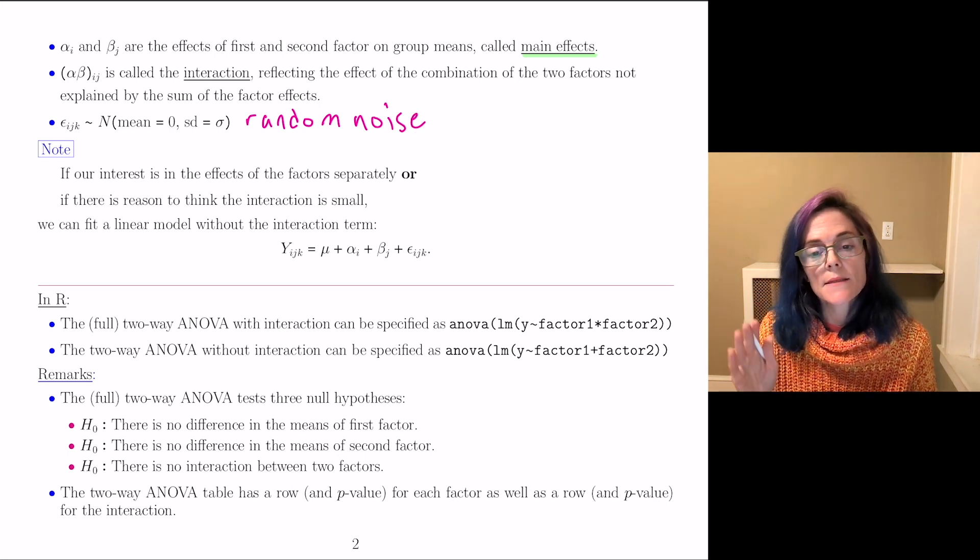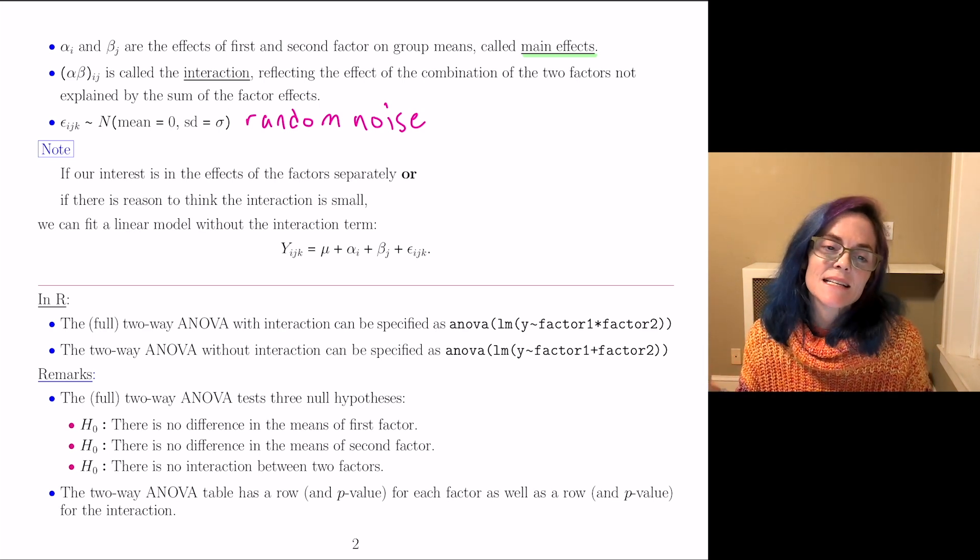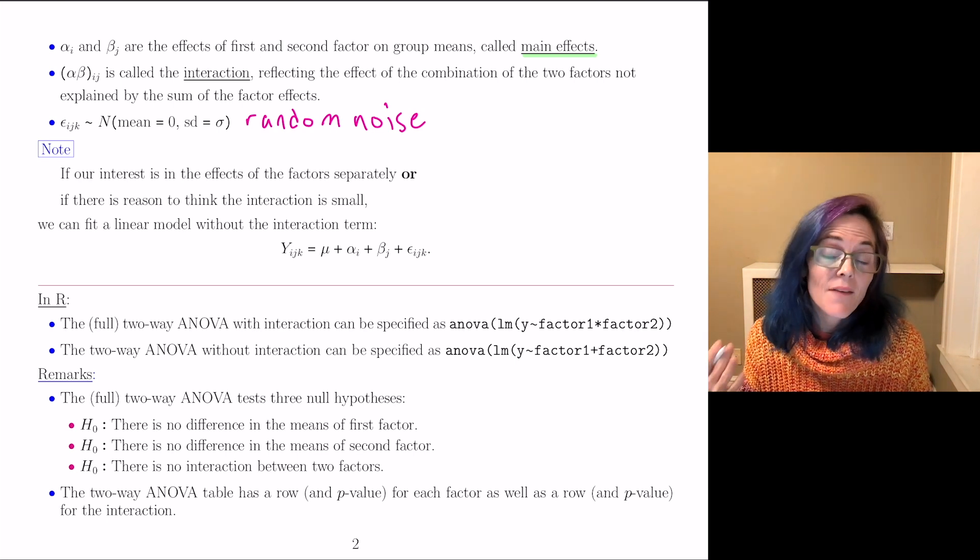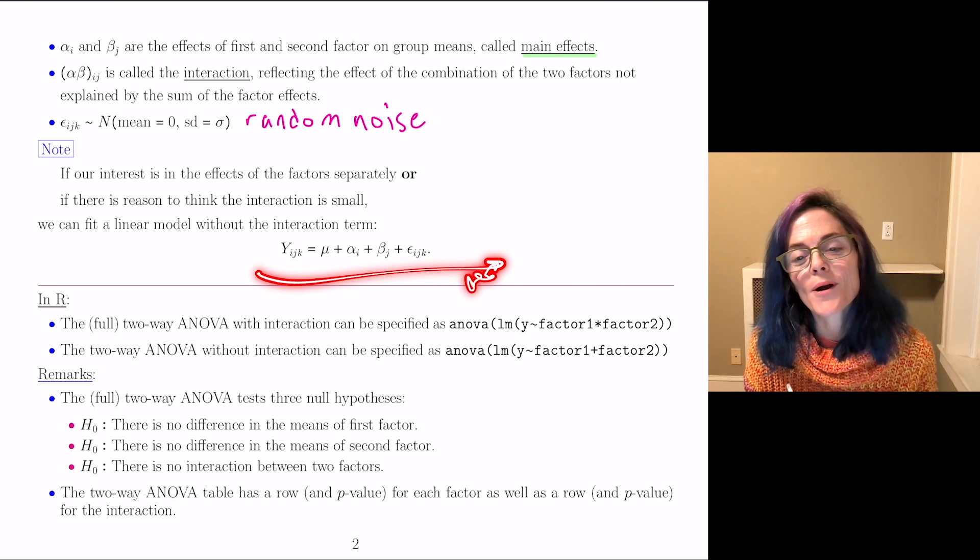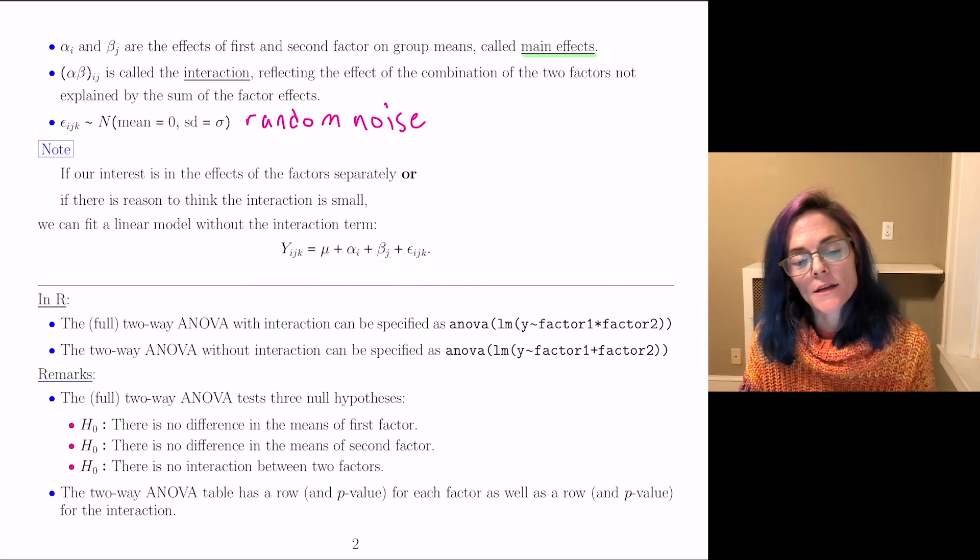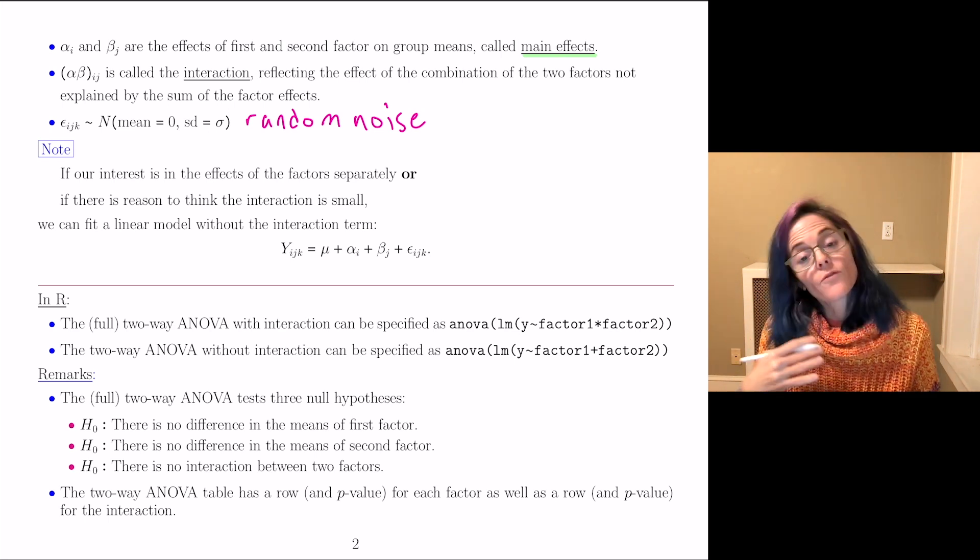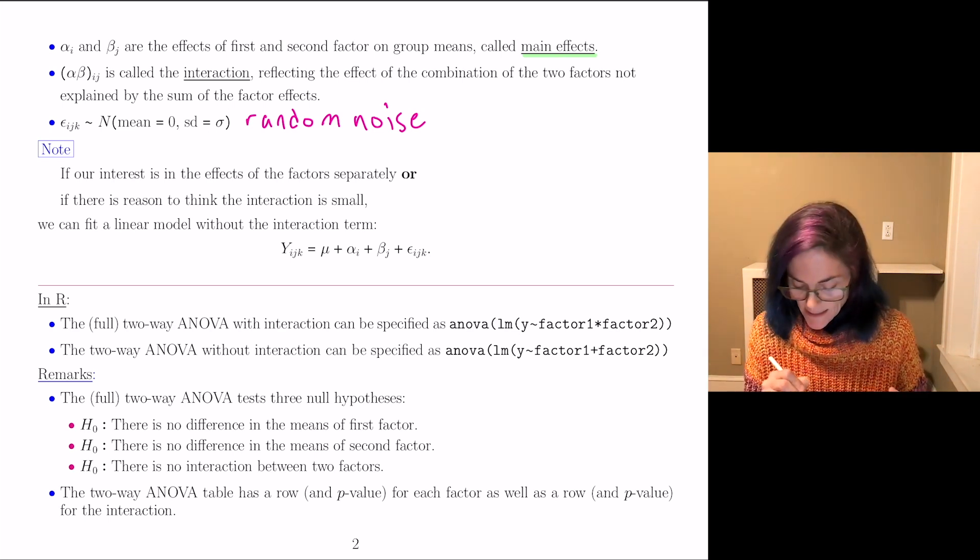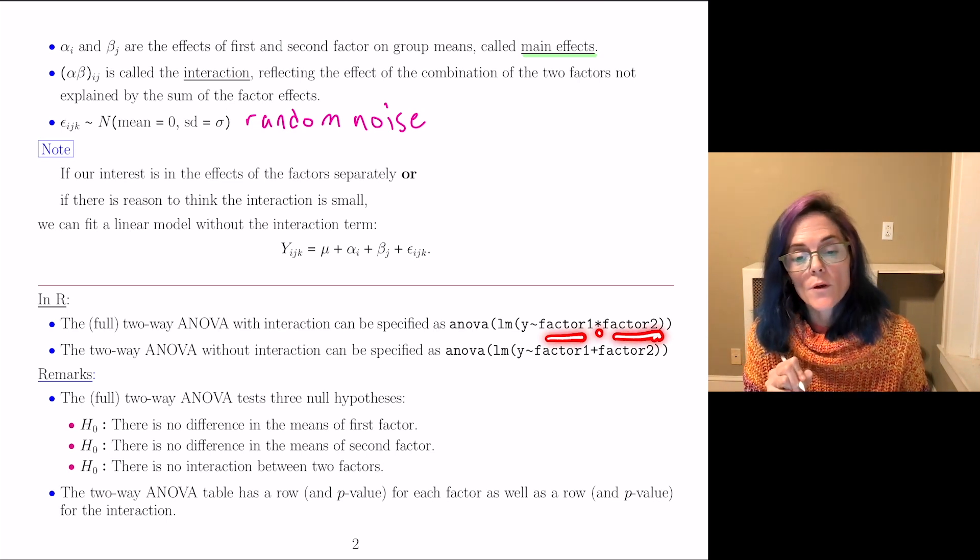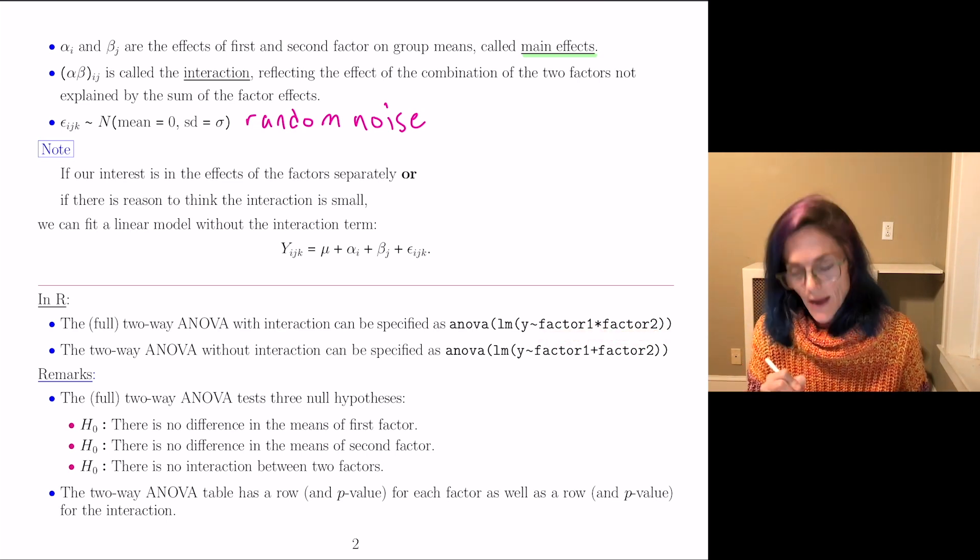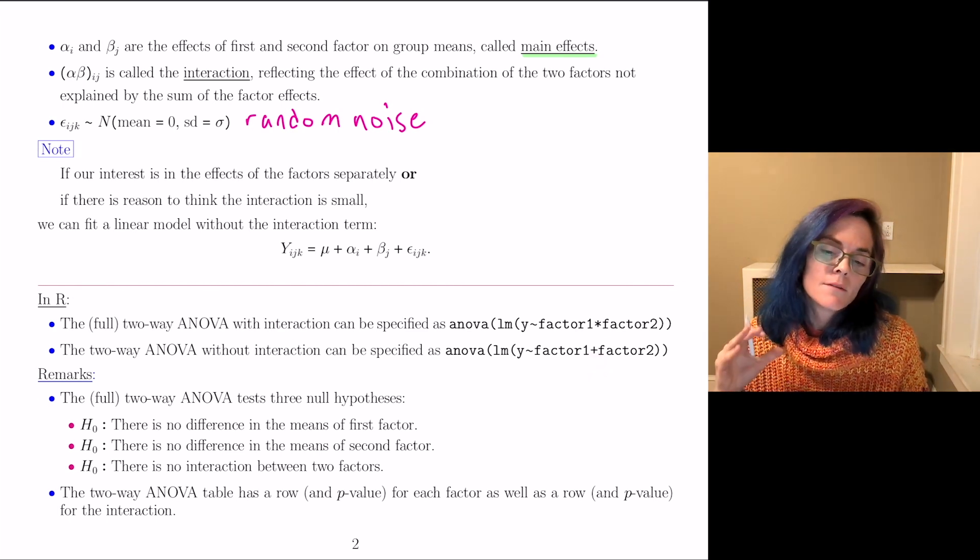Now, if our interest lies in the effects of the factors separately, or if there is reason to believe that the interaction is small, we can fit a linear model without that interaction term. And well, it's exactly as I wrote before, but it lacks the interaction term. So in R, if we want the full ANOVA with the interaction, we put factor one times factor two. If we want the ANOVA without the interaction, we put this plus here.